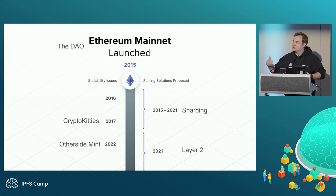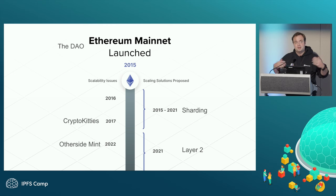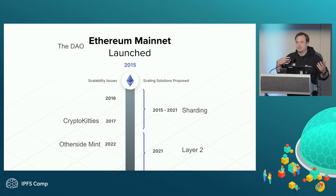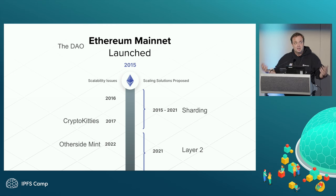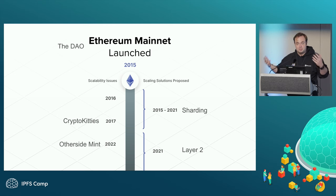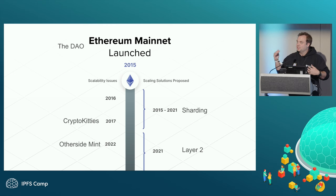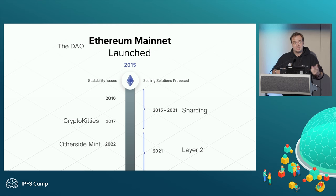The Otherside mint for Otherdeeds happened. Many people tried to mint these deeds, and there was a lot of retrospective on how gas-efficient the contract was. People remember it effectively taking down the Ethereum network — it was not able to handle that amount of traffic. That was roughly the same time Ethereum shifted from sharding to a layer two path to scale.